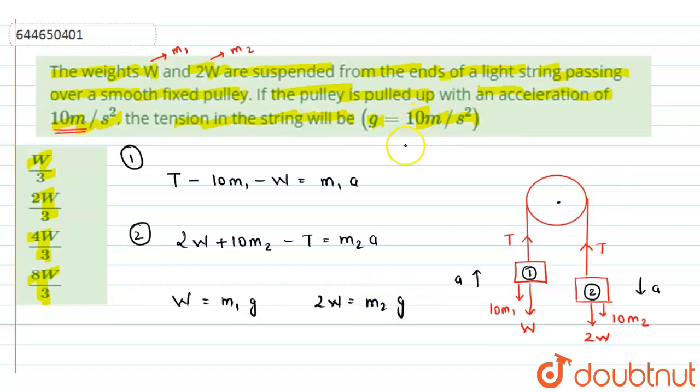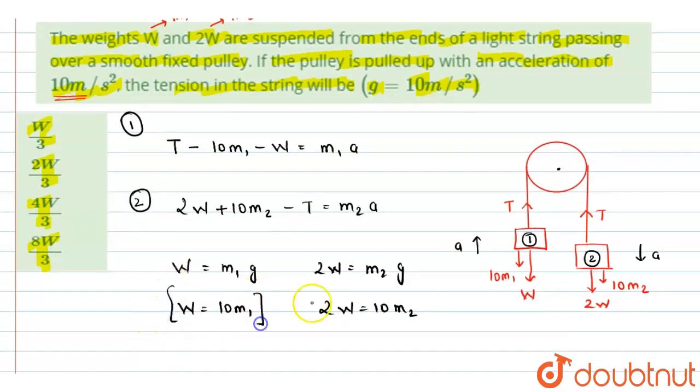So this is just the force balancing equation in vertical direction. Now I have two more equations where the w will be equals to m1 into g. And 2w weight would be equals to m2 into g. So we have to take g equals to 10. So here I can write w will be equals to, putting g equals to 10, we will get 10 m1, and 2w will be equals to 10 m2.